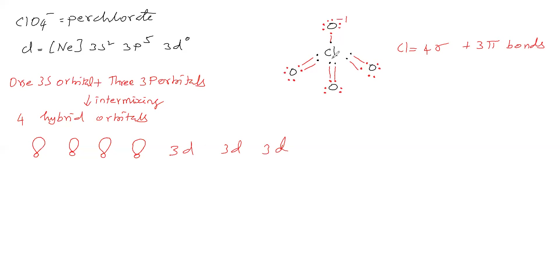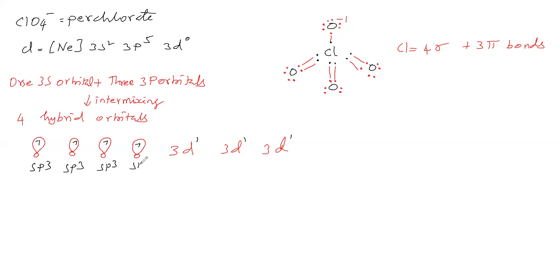Chlorine has 7 bonds and 7 valence electrons, so all 7 electrons go for bonding — one electron to each sp³ and 3d orbital, with no lone pair. The hybrid orbitals are sp³.